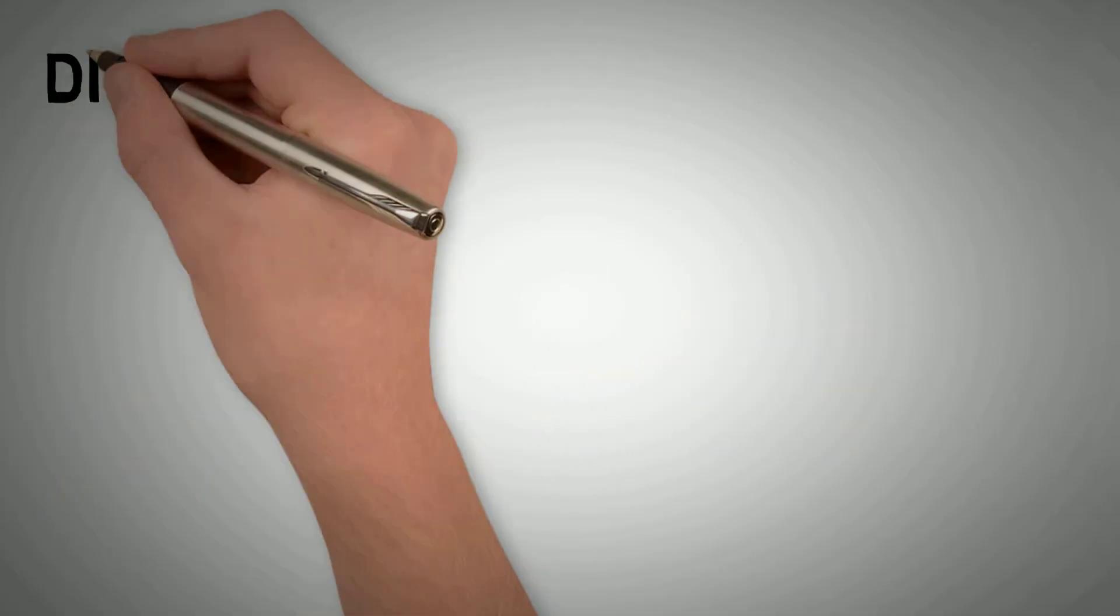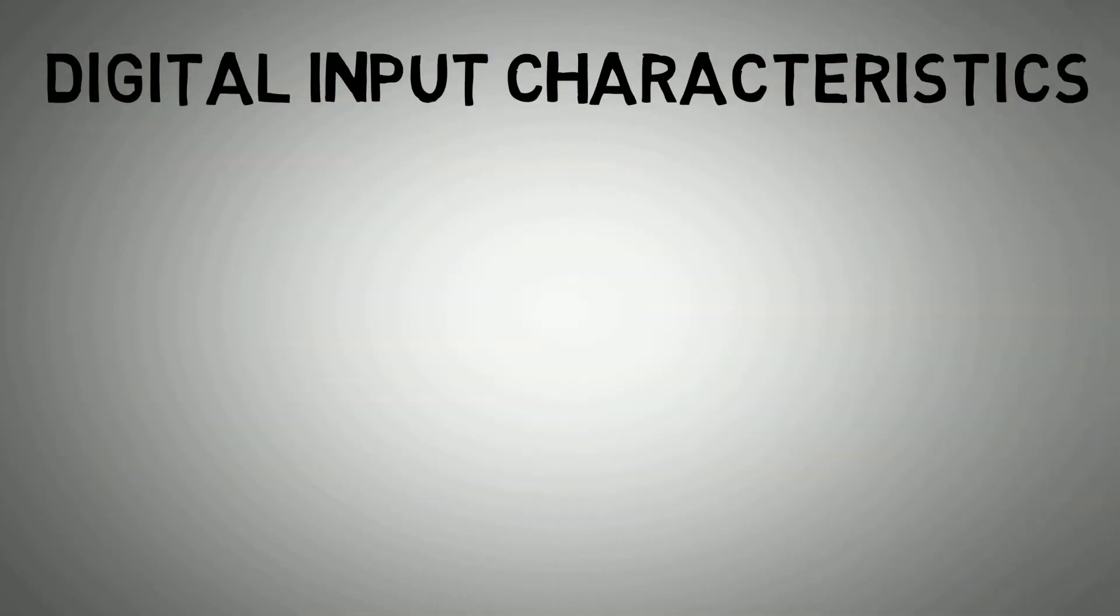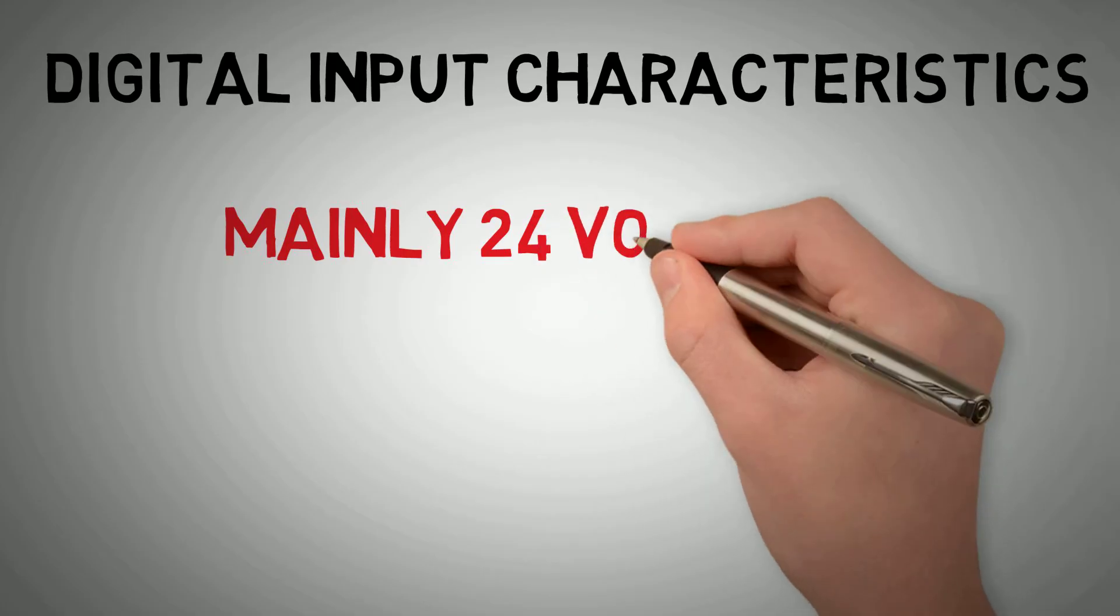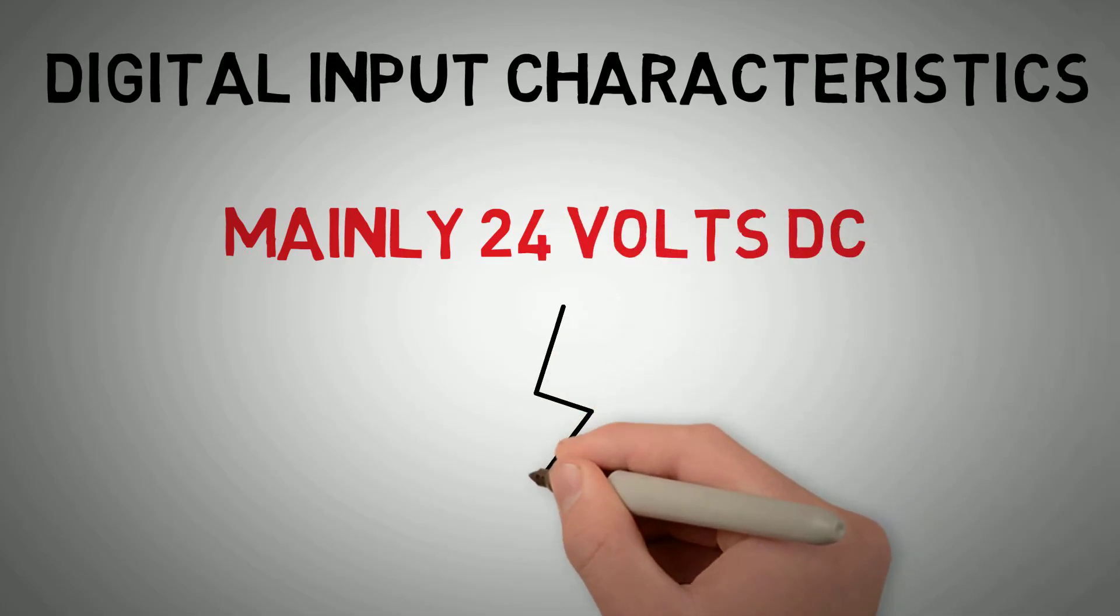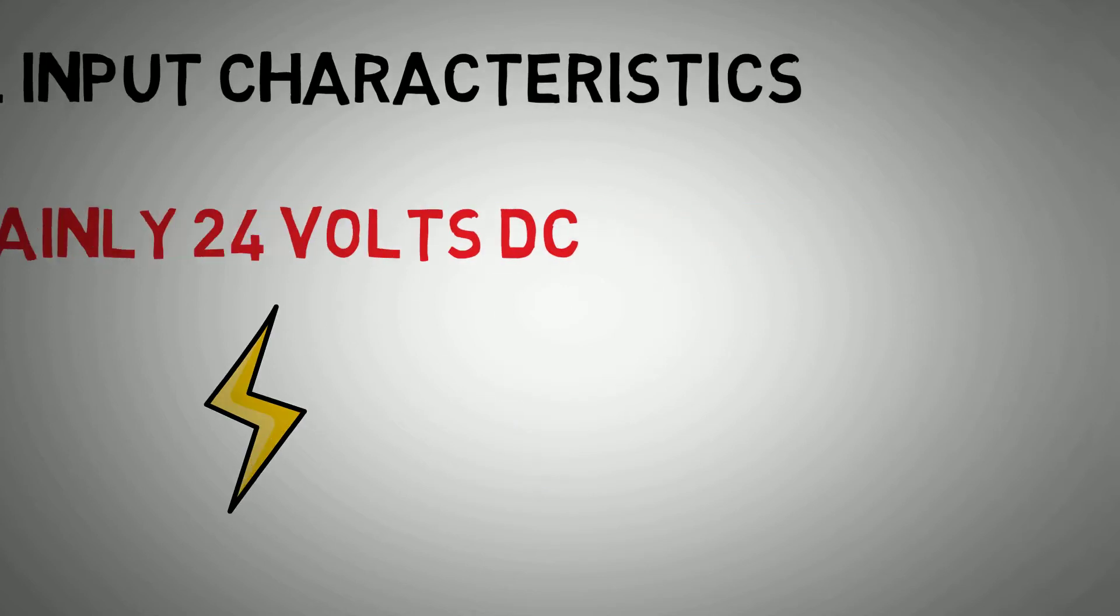Let's talk about the characteristics of a digital input. The most common control voltage for a digital input is 24 volts DC, but you'll often find other, more obscure variants. Always look at the specification sheets for your specific system.